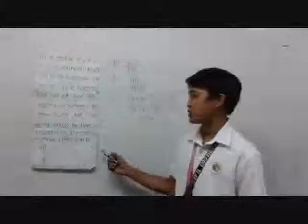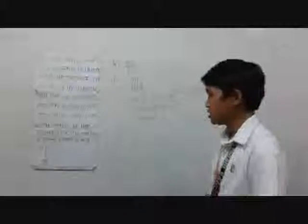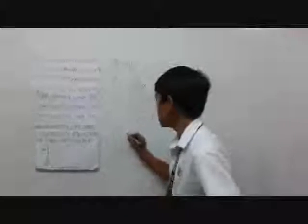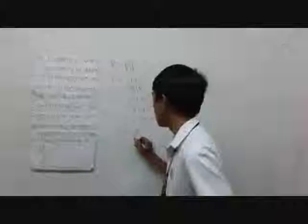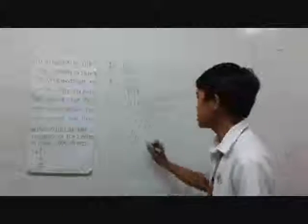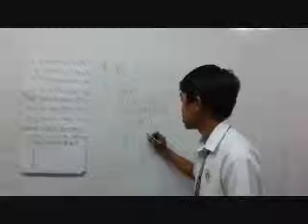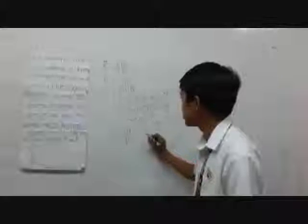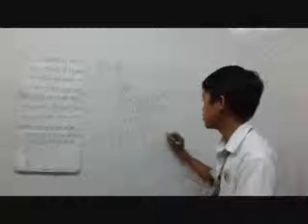To compute for the time required for the electron to move from A to B, T equals distance over velocity. Since it's semicircular, pi times radius over velocity. By substituting: